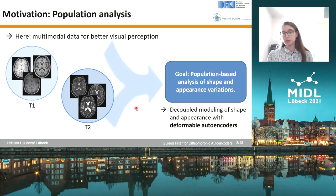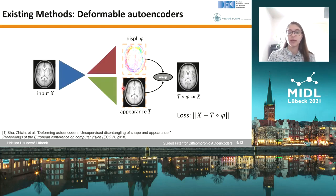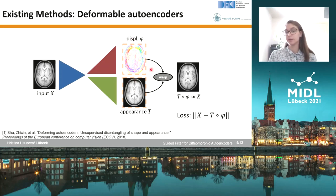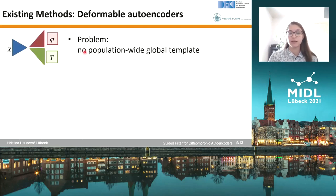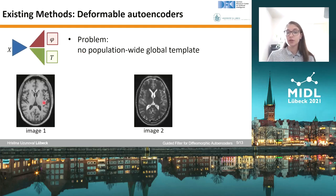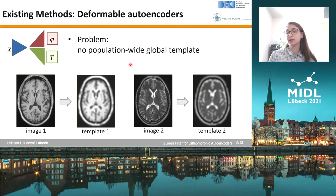The first and most common method to do so would be to use deformable autoencoders. Deformable autoencoders have an encoder-decoder structure; however, they have two decoders. One produces the displacement field and the second produces an appearance template, which can then be warped with the displacement field, giving us an image similar to the input. However, the problem with this method is that we don't produce a population-wide global template — we only produce a template for each individual input image. So if we input a T1 and a T2 image, we'll end up with templates that look like T1 and T2 templates respectively.